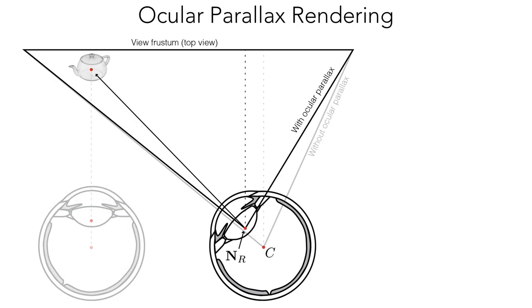Given a user's fixation point, ocular parallax rendering modifies the view and projection matrices in the standard graphics pipeline, and incurs no additional rendering costs.